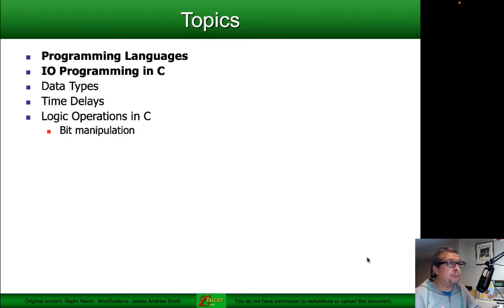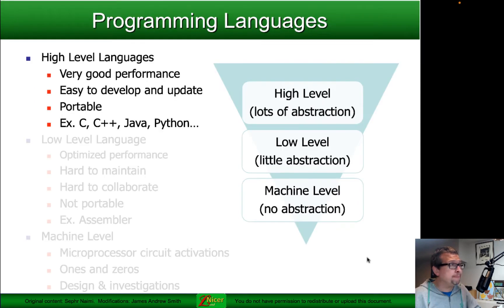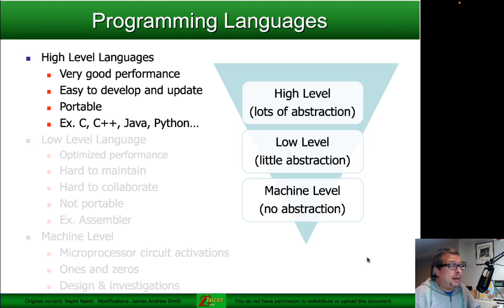Today we're going to be talking about programming languages with respect to microprocessors, and specifically we're going to talk about programming in C for input-output programming. When we talk about programming, we often talk about high-level languages which offer very good performance, they're easy to develop and update for, and they're portable. Examples of these languages would be C, C++, Java, Python, MATLAB, etc.